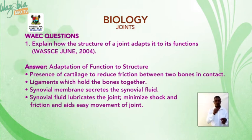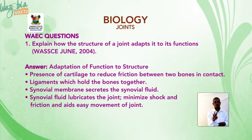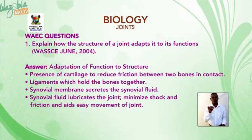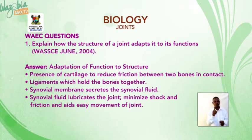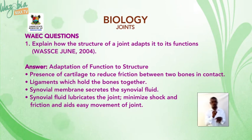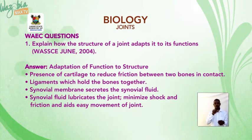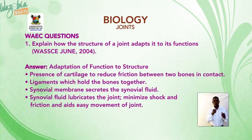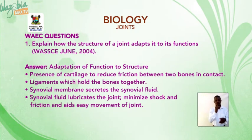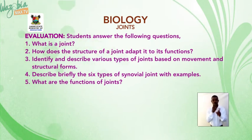WAEC past question: explain how the structure of a joint adapts it to its function (June 2004). Answer — adaptation of structure to function: presence of cartilage to reduce friction between two bones in contact; ligaments hold the bones together; synovial membrane secretes the synovial fluid; synovial fluid lubricates the joints, minimizes shock and friction, and aids easy movement of joints.